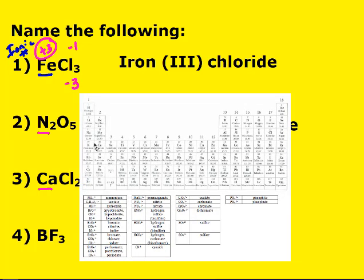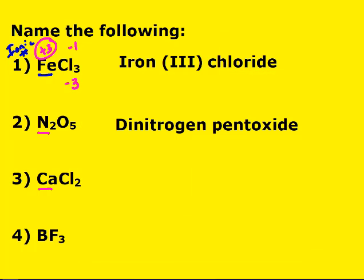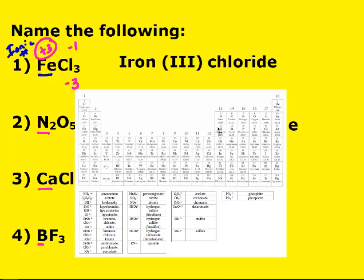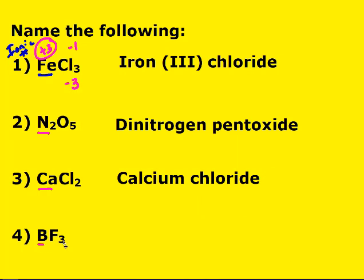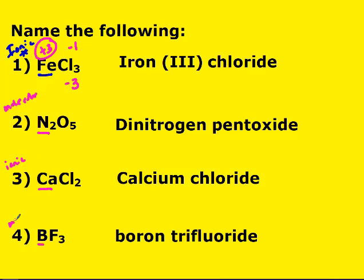Calcium is in group 2A — a metal — so I just name the two elements: I have calcium and chlorine, so calcium chloride. Then B — boron — on the periodic table it's a nonmetal, so I need to use prefixes. One boron and three fluorines gives boron trifluoride. That one was molecular. So our four examples were: iron(III) chloride — ionic; dinitrogen pentoxide — molecular; calcium chloride — ionic; boron trifluoride — molecular.